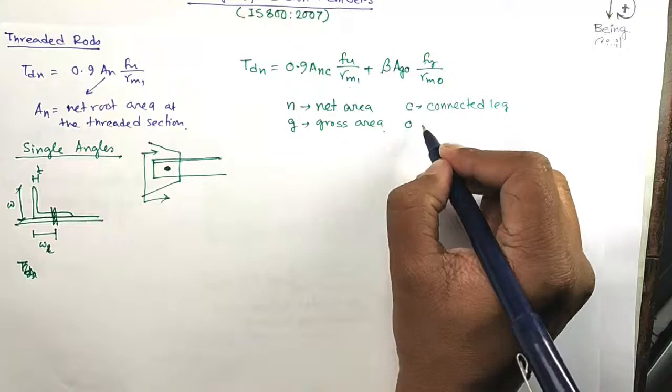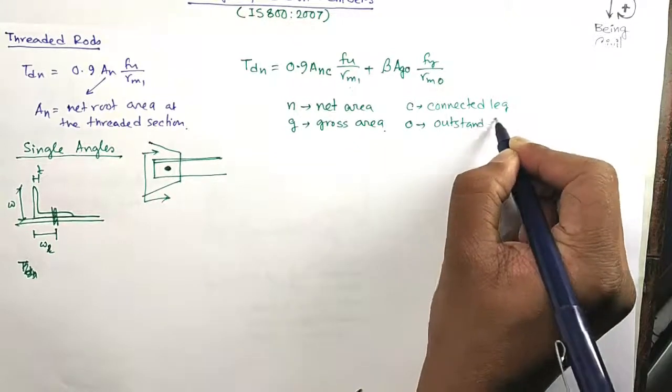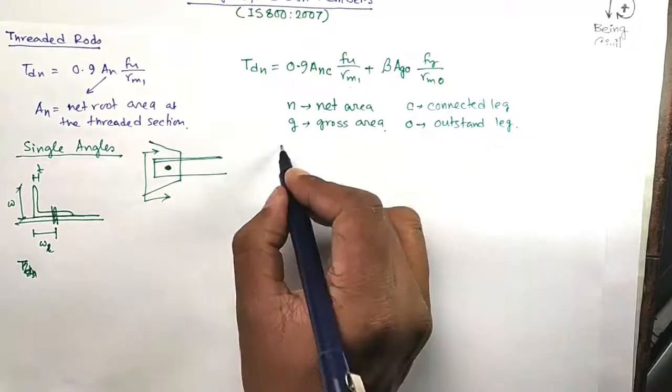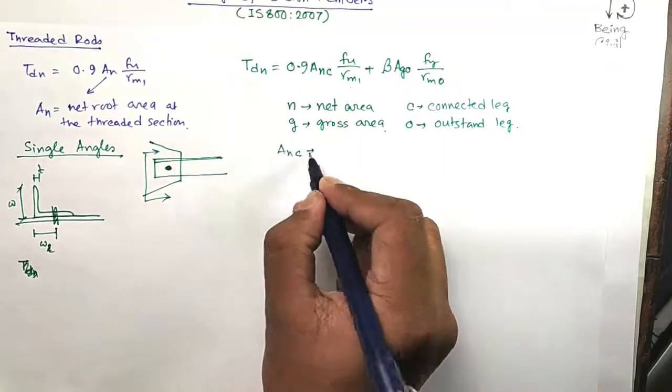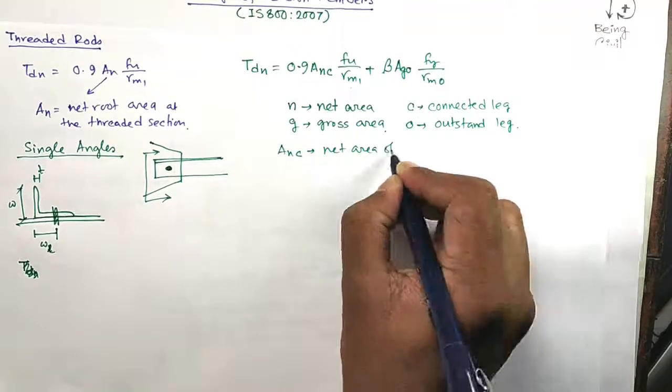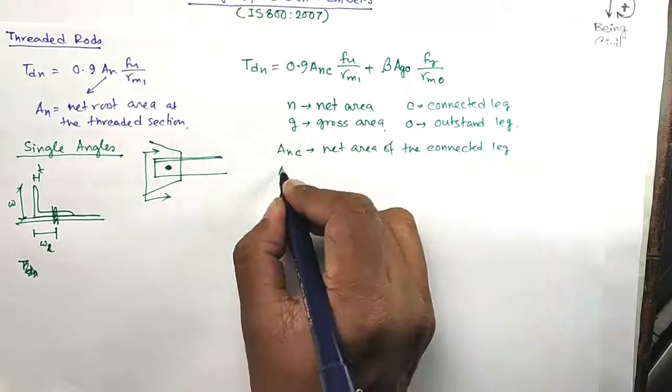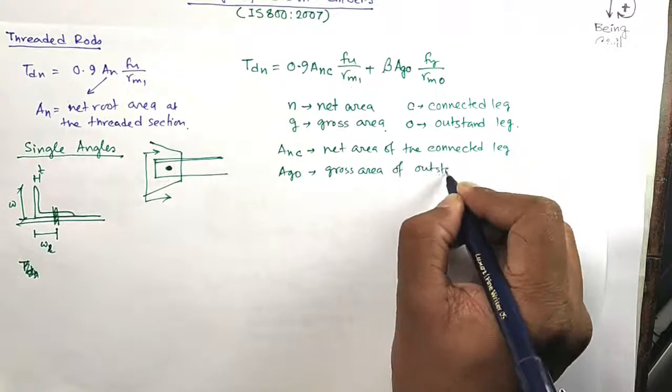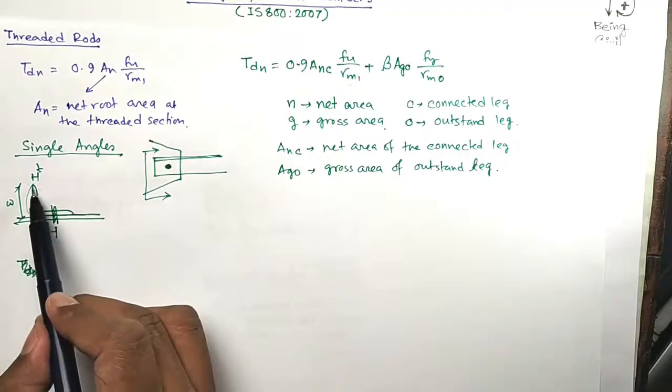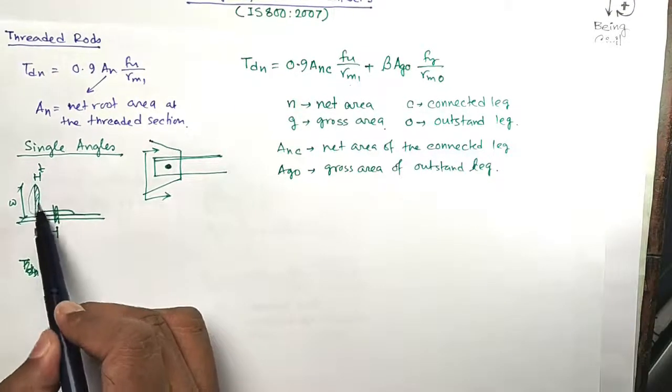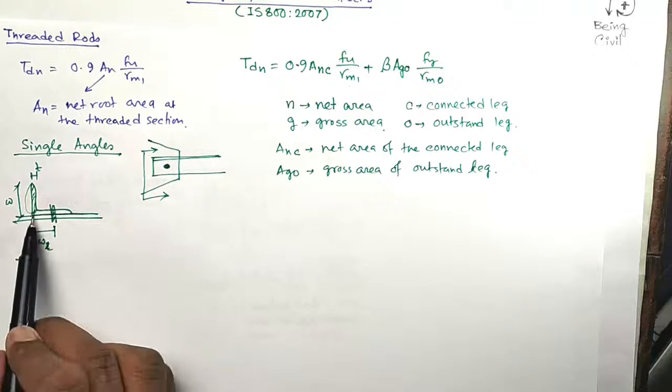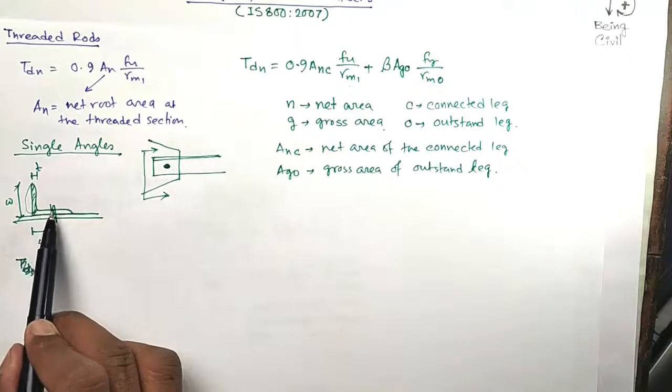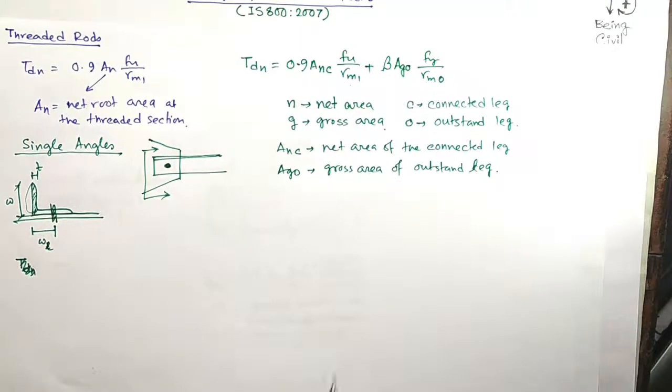So C for connected leg and O for outstand leg which is not connected. ANC is the net area of the connected leg. AGO is the gross area of outstand leg. The gross area of the outstand leg means this area, and the net area means this area minus hole area. And you see here is a beta.